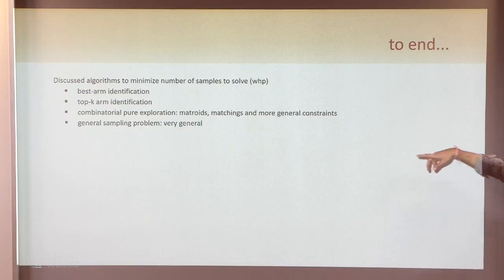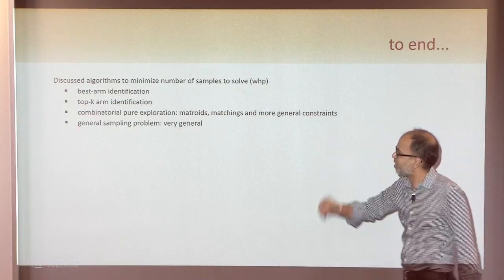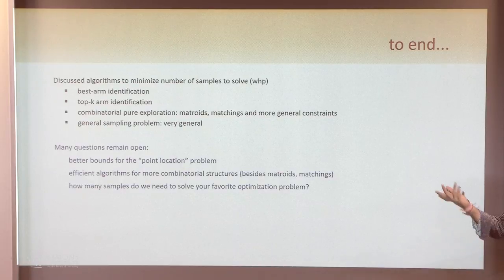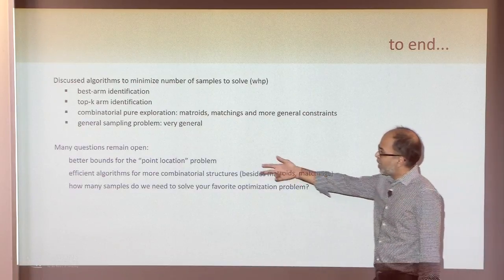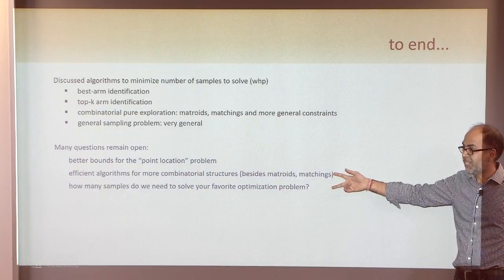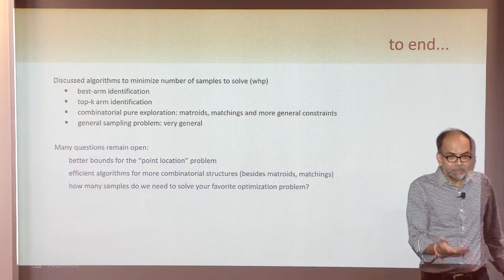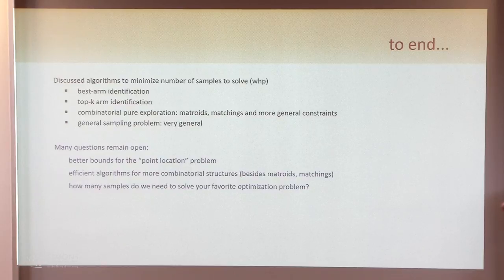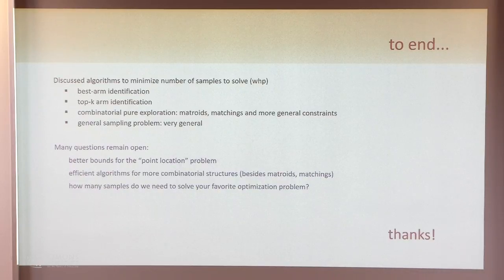We talked about a variety of problems — maybe too many — but hopefully some of these are interesting. There are natural questions all over the place: better bounds, efficient algorithms. I don't know efficient algorithms for many of these settings. In general, there's a whole bunch of optimization problems we like to solve — if the data is uncertain, how many samples do I need to solve my problem? I'd love to answer this in much more generality. That's pretty much all I have. Thank you.